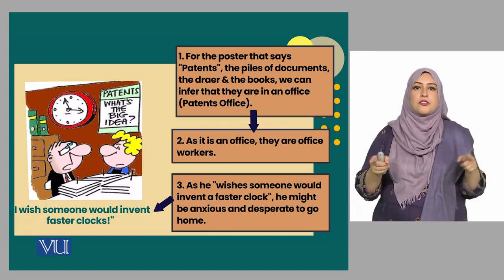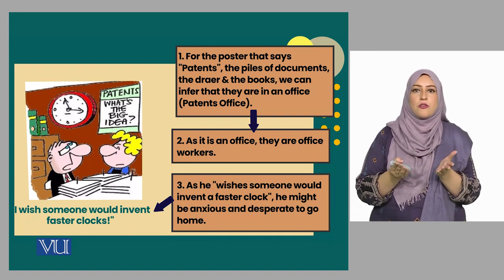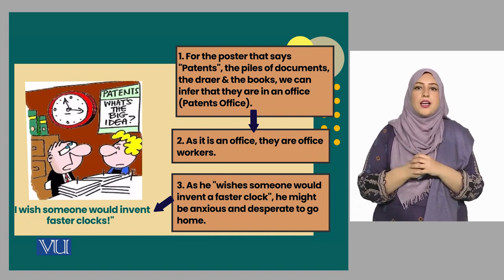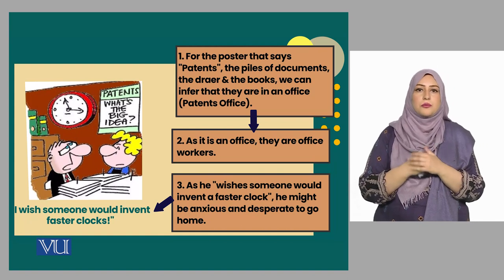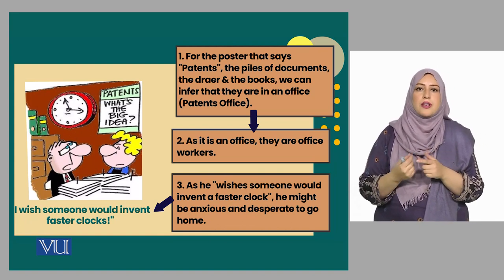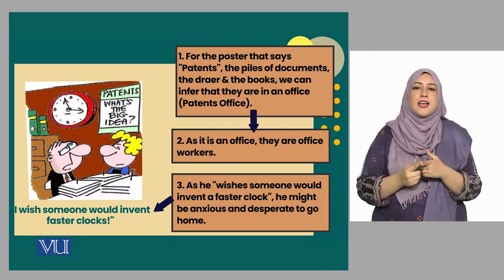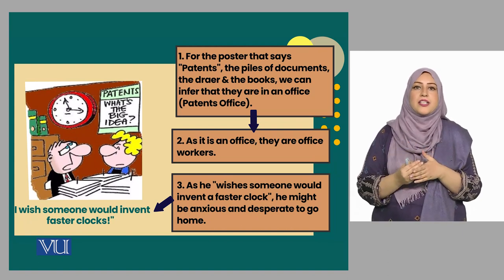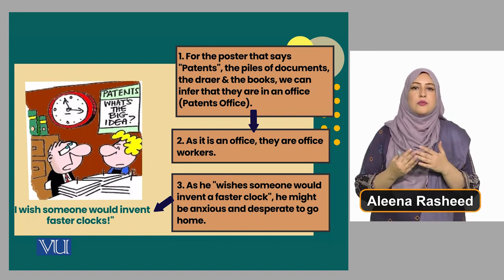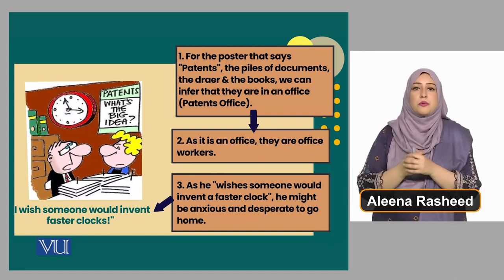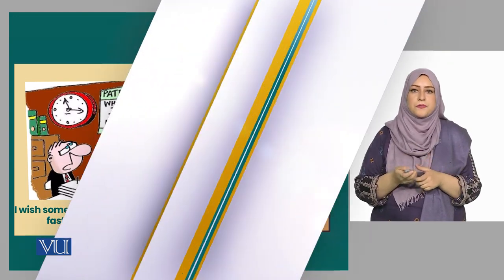Since it is an office room, we can infer that the people in that office are office workers. As for why that person particularly wants the clock to work faster — looking at the expression on his face, he looks very tired and desperately wants to go home. That is why he wishes there were a clock that works faster.